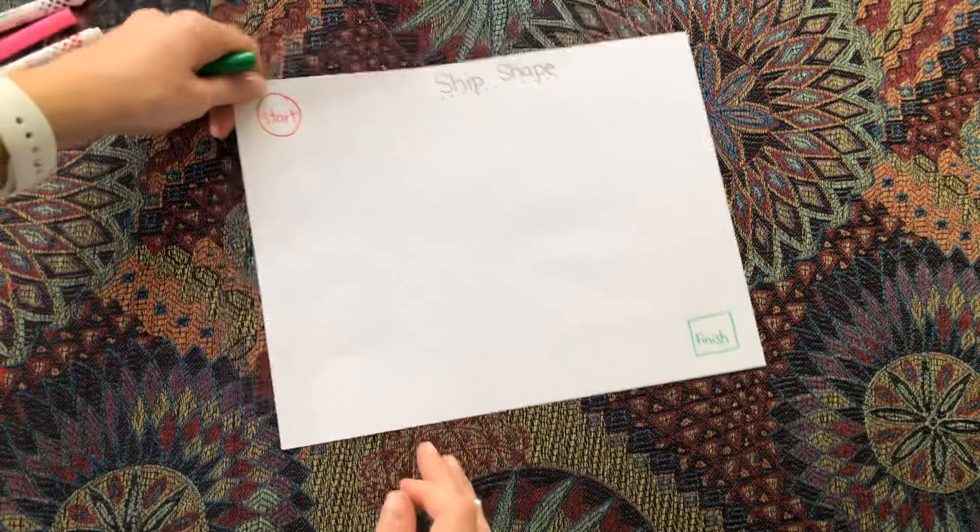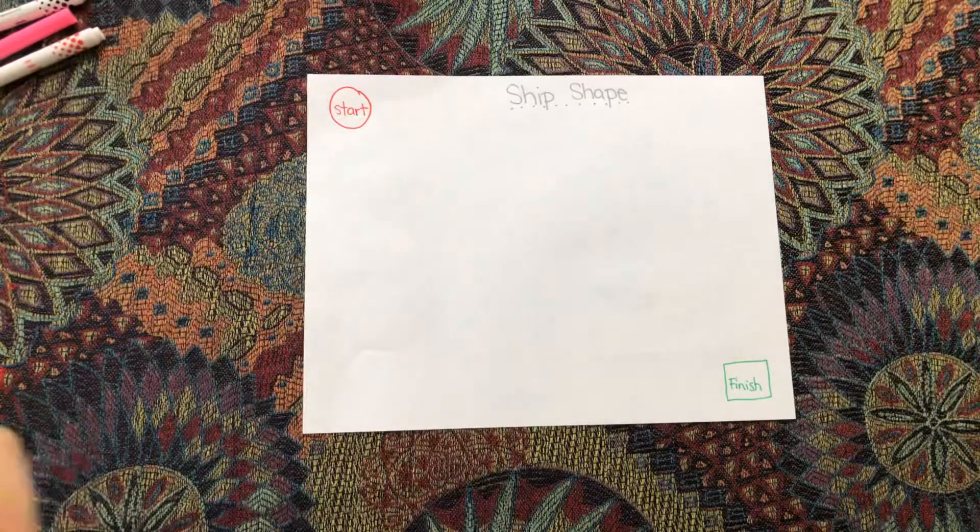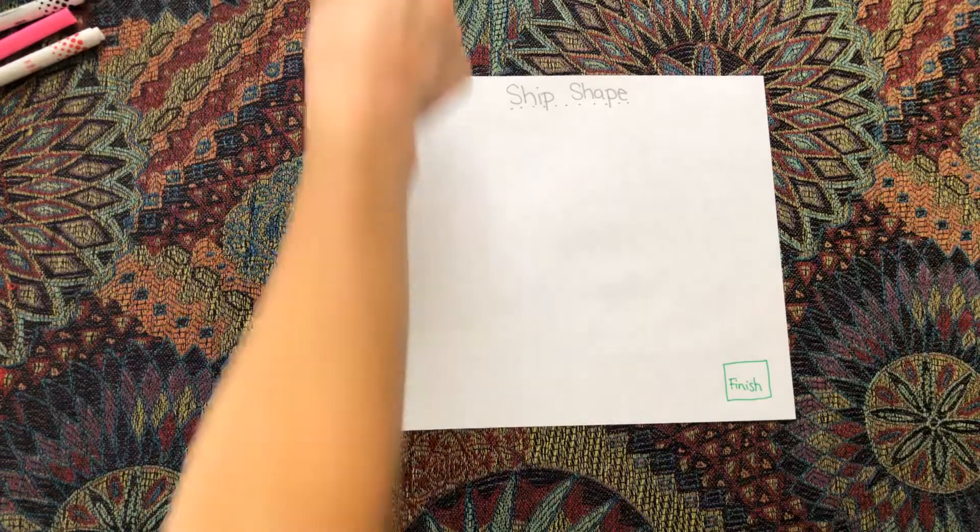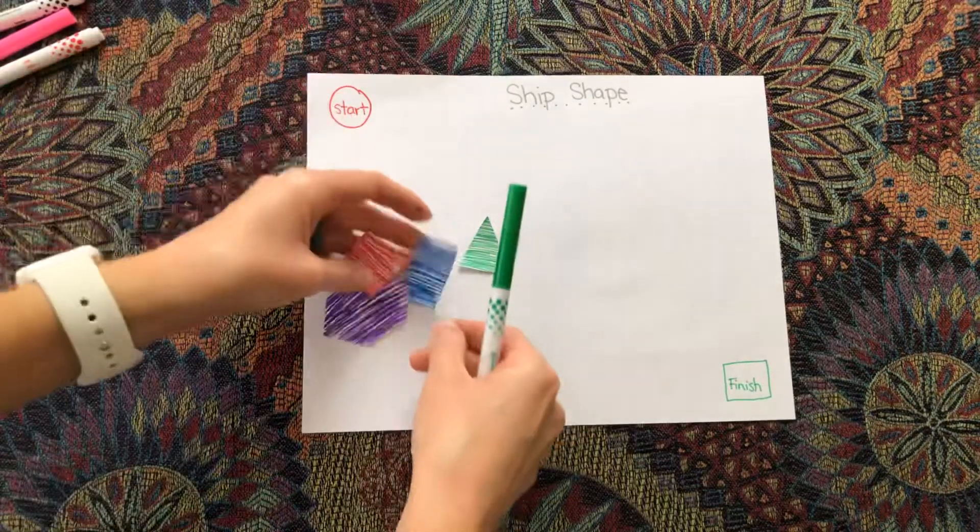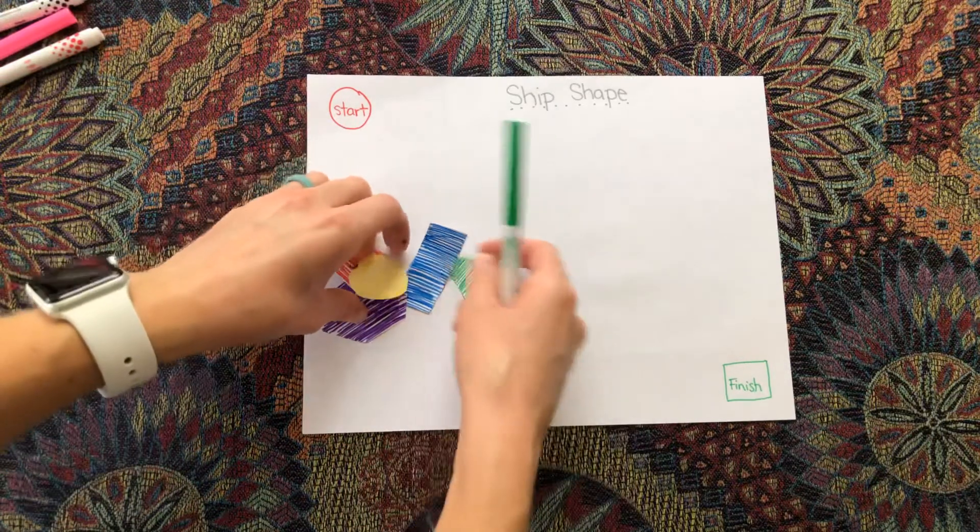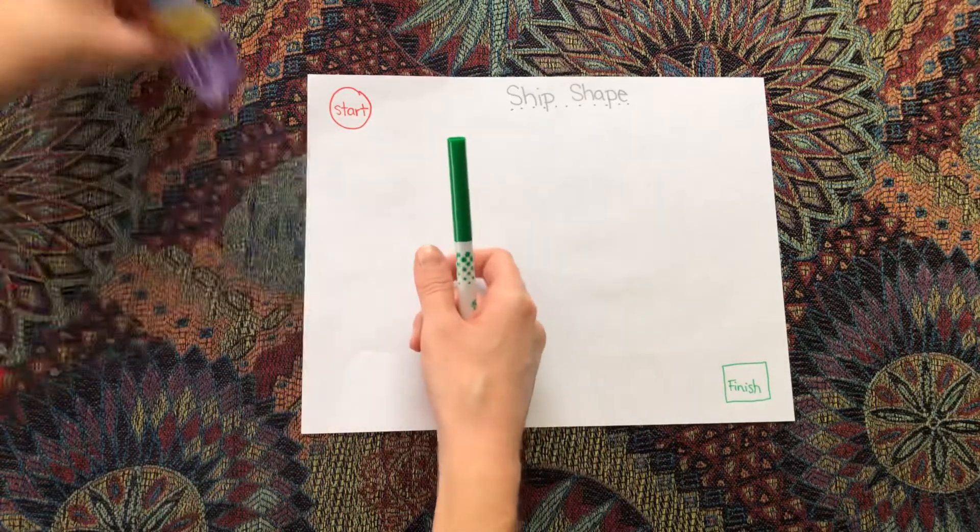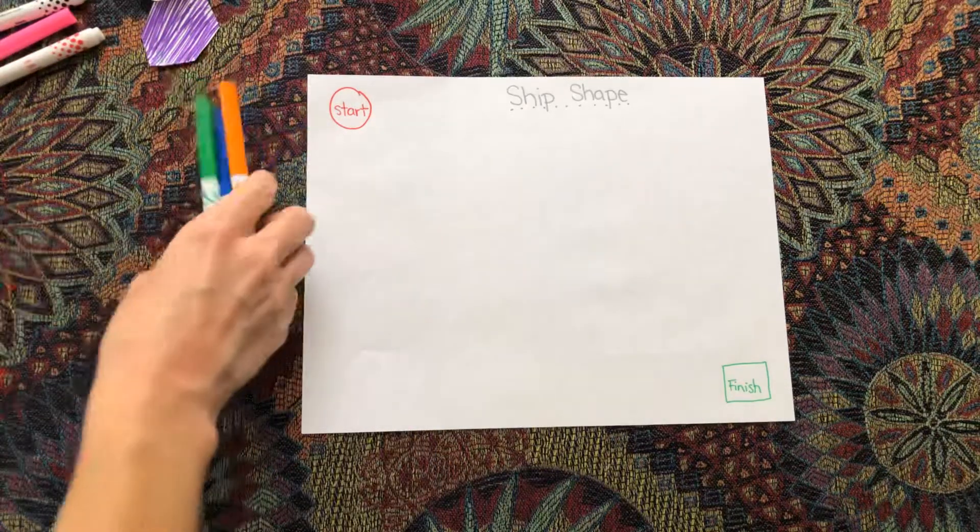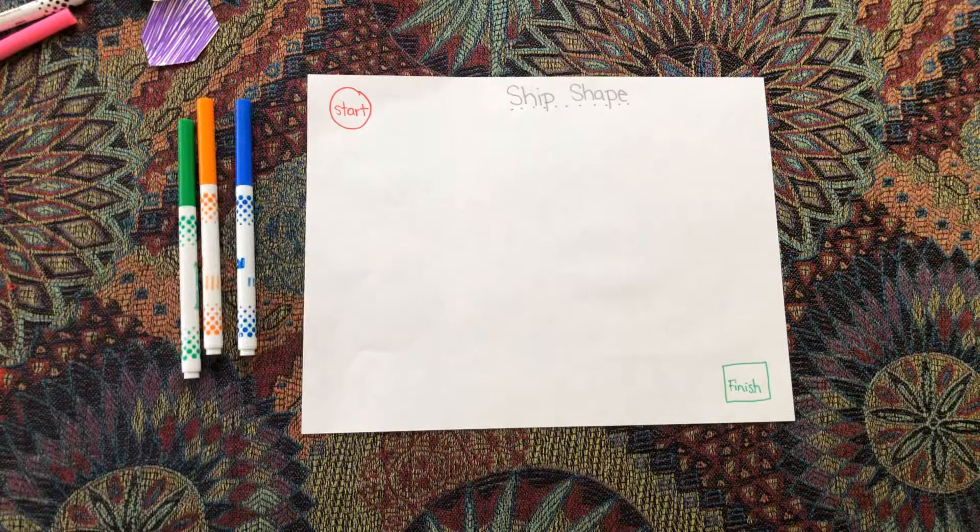After you have your start and finish, you need to add a path drawing two-dimensional shapes. If you want, you can trace shapes if it makes it easier for you, or if you're really good at drawing the shapes, you can just draw them. I'm going to pick some fun colors. Blue, orange, here we go, and draw some shapes.